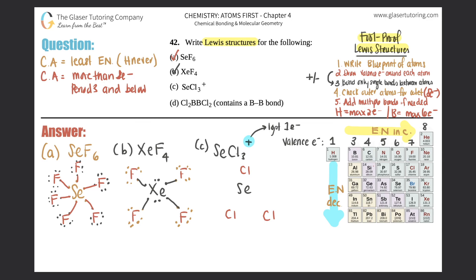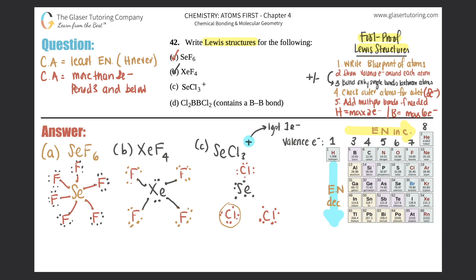Put Cl, Cl, Cl as symmetrically as possible, then draw the valence electrons: selenium has six, so one, two, three, four, five, six; each chlorine gets seven. Now take the charge into account. Since there's a positive charge, one electron must be removed. It's fairest to remove it from selenium rather than from one of the three chlorines, so erase one electron from selenium.